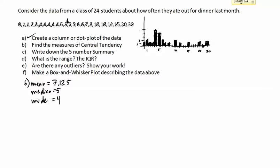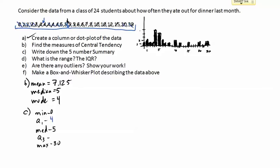Now for the five number summary — the minimum, first quartile, median, third quartile, and maximum. The median is already five, the minimum is zero, and the maximum is 30. For Q1, I take the lower half of the data — the first twelve numbers — and the median of that half lands between four and four, so Q1 is four. For Q3, working through the upper half, the median falls between ten and eight, so Q3 is nine.